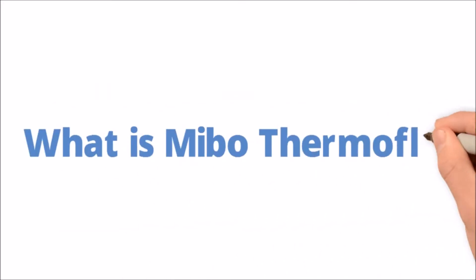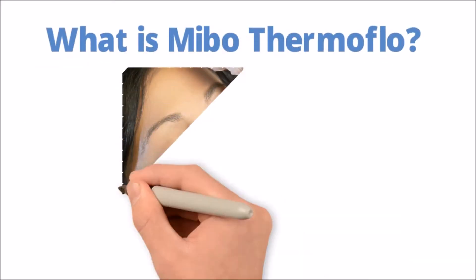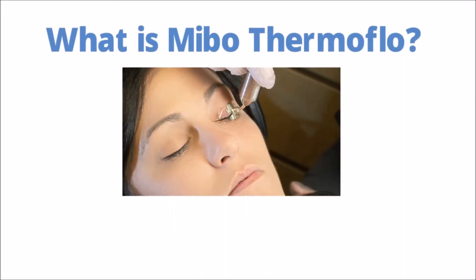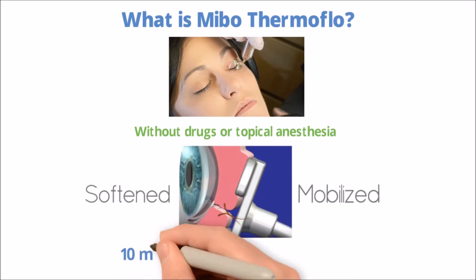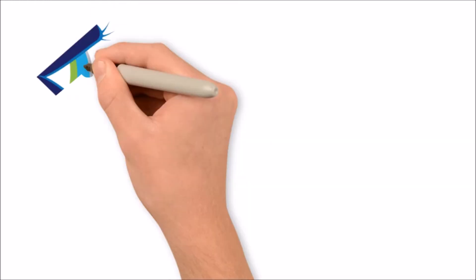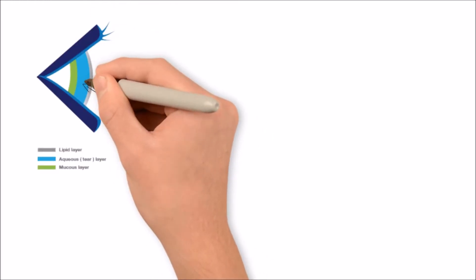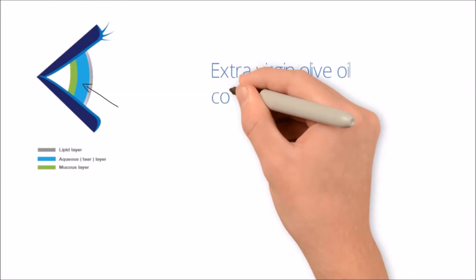What is Meibo Thermoflow? Meibo Thermoflow delivers consistent, emissive, soothing heat to the meibomian glands without drugs or topical anesthesia. Inspissated lipid secretions are softened and mobilized through a 10-minute gentle ocular massage. The lipids or oils produced in the eyelids are supposed to look like extra virgin olive oil consistency.